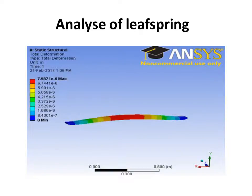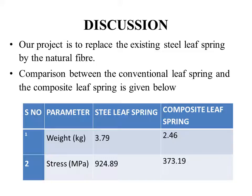Maximum deflection is 7.857 and minimum deflection is 8.4303. Our project replaces the existing steel leaf spring with natural fiber composite. Comparison between conventional and composite leaf spring: weight — steel leaf spring 3.79 kg, composite leaf spring 2.446 kg. Stress — steel leaf spring 924.89 MPa, composite leaf spring 373.19 MPa.